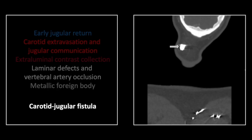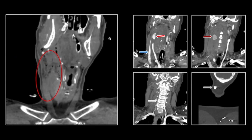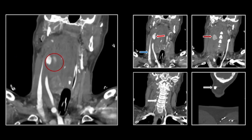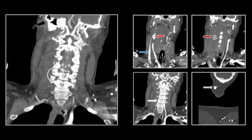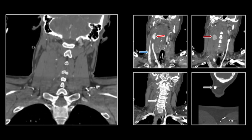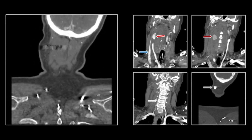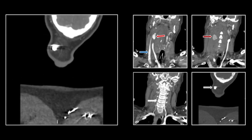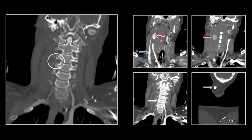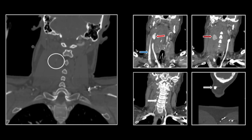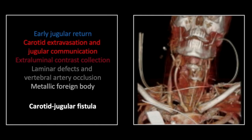There again the offending bullet. Note the early jugular return, the carotid pseudoaneurysm, the vertebral artery column, and posteriorly the offending bullet. There you see the laminar defect. Three Ds do help you appreciate the early jugular return, the communication between the carotid and the jugular, and posteriorly the second lobe of that carotid pseudoaneurysm. There is the position of the bullet, posteriorly.